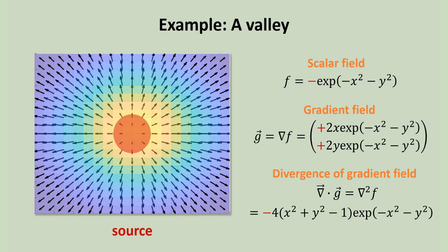On the other hand, if we flip the sign of the scalar function F to describe a valley instead, its Laplacian yields a source for the gradient field as indicated by the red color.